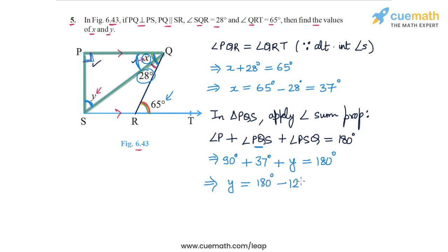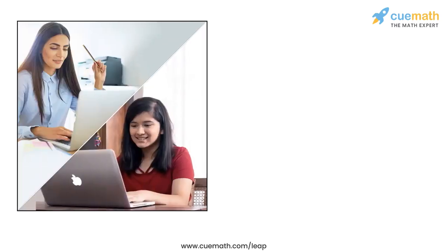So 90 plus 37 is 127, so y is equal to 180 minus 127, and this is equal to 53 degrees. So the answer to question 5 is that the value of x is 37 degrees and the value of y is 53 degrees, and that solves question 5.